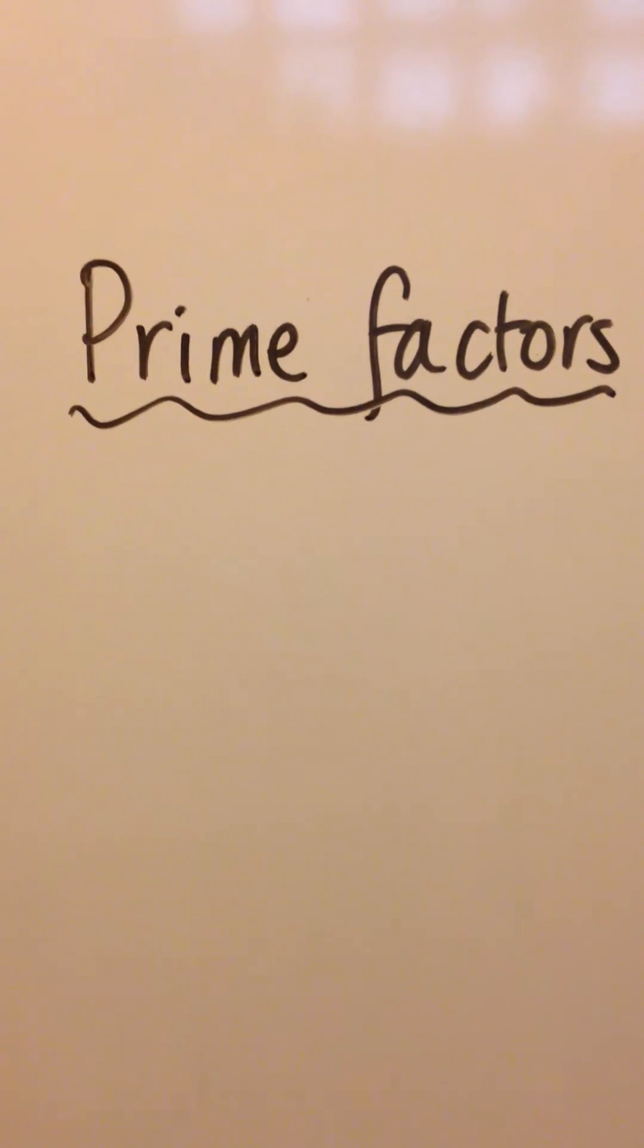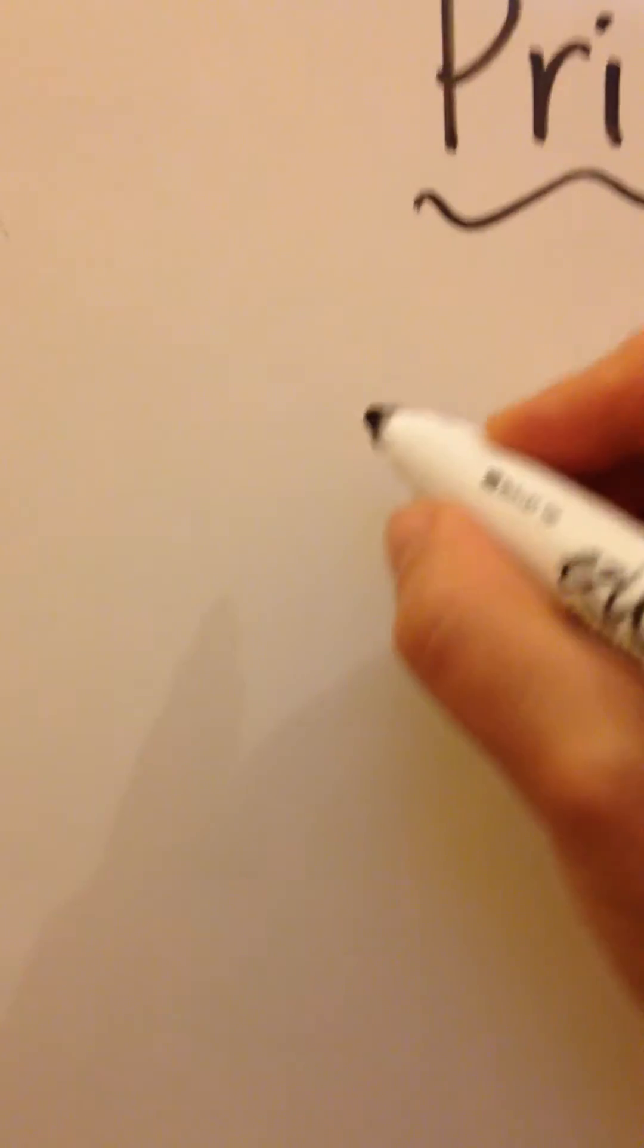Prime factors of a number. Let's start with 24. Write down the number, put a circle around it.